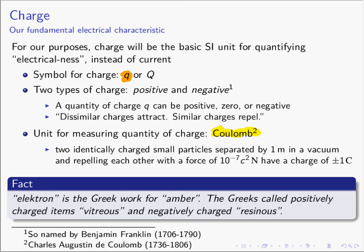The coulomb is a quantity of charge — a measurement of charge. If you want to envision charge as something tangible, a coulomb is basically the size of the bucket you use to scoop up an amount of charge. The formal definition of how big a coulomb is has to do with particles separated by a meter in a vacuum. That definition doesn't help us greatly, but suffice to say it's an amount of charge you're dealing with.